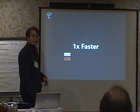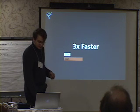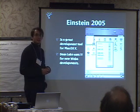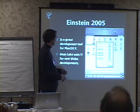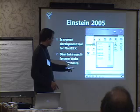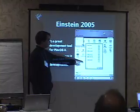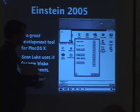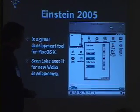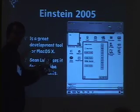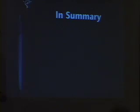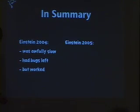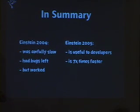Was it one time faster? Two times faster? No. Three? Four? Five? Six? Seven times faster than the 2004 version. Today it's a great development tool for Mac OS X. Sean Luke sent a screenshot to a couple of people — with his new web development work, he uses the Einstein emulator to directly develop on his Mac, so he doesn't have to download the package onto his Newton. It's very convenient for him; he's very happy about it, though he also makes some bug reports. In summary: Einstein 2004 was awfully slow, had bugs left, but worked. Einstein 2005 is useful for developers — it's seven times faster.